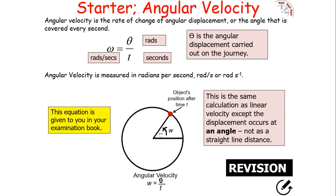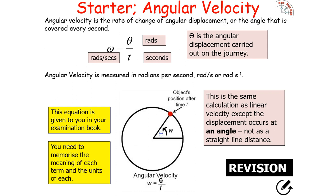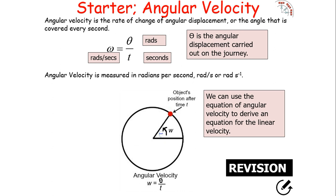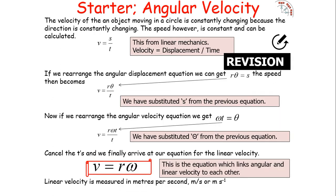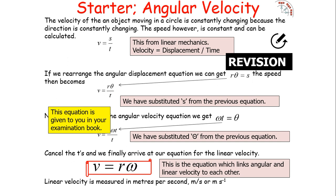We can use the angular velocity equation to derive an equation for linear velocity. Since linear velocity is displacement divided by time, and displacement equals r·θ in angular motion, we substitute that in. Knowing that omega equals θ over t, so θ equals omega·t, we substitute and cancel the t's, arriving at: linear velocity equals the radius of the orbit times angular velocity (V = rω).